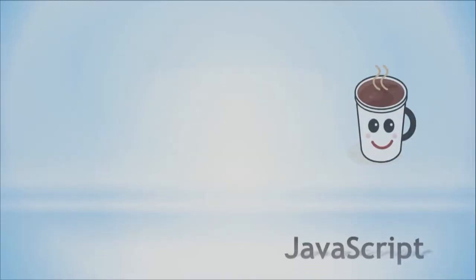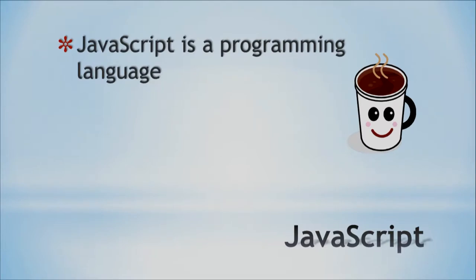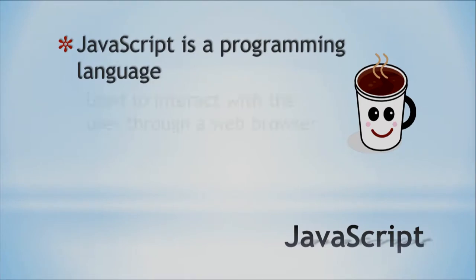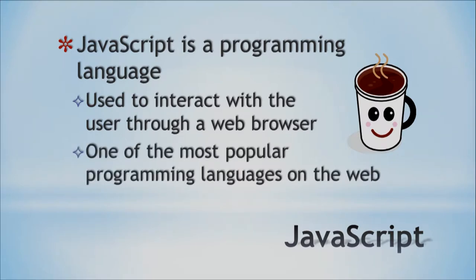Next topic is JavaScript. JavaScript is an actual programming language. CSS is formatting, but JavaScript is an actual language that you use to interact with the user over a web browser, and it's one of the more popular programming languages on the web. So if you're thinking you're going to be a web programmer, you need to learn JavaScript. I highly recommend learning that language — it'll make your web pages a lot more interactive and you can do all kinds of cool things.